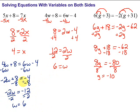So for variables on both sides: first step, make sure you get all the variables together on one side. After that, follow the steps we've used in previous sections.